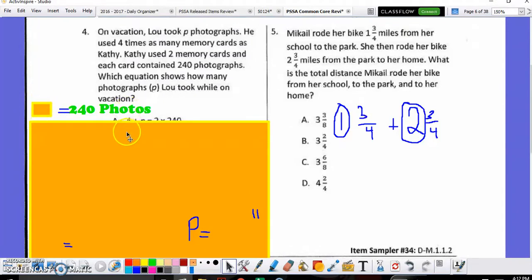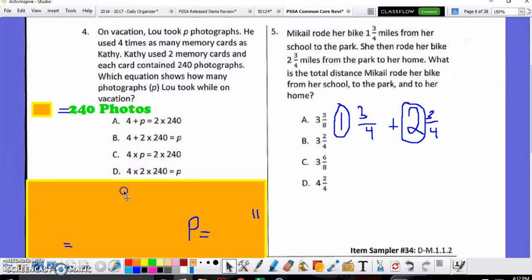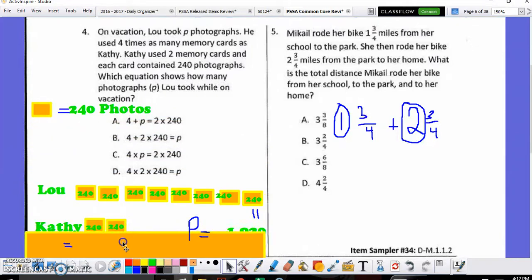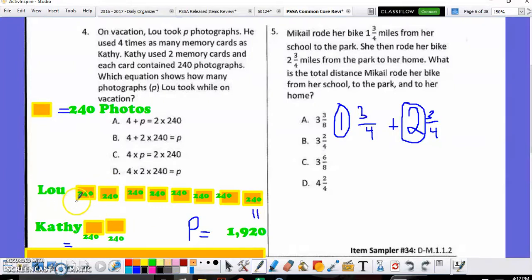So, I'm going to make a bar model. One bar is going to be equal to 240 photos. Then they give us four different choices. So, I need to actually solve to see how many photos Lou took. Here's how I can do it. I know that Kathy took two of these cards. And in each one of the cards is 240. But I'm not worried about Kathy. I'm worried about Lou. And Lou had four times as many. So, if two of these, which again would be this bar and this bar combined, is equal to one for Lou, you have to multiply that by four. So, he had four times as many. Here's one, two, three, and four.